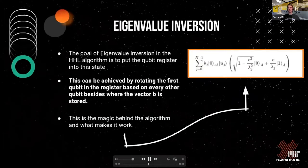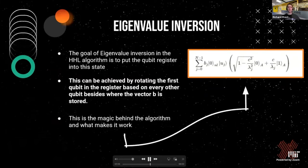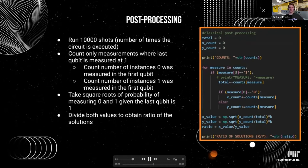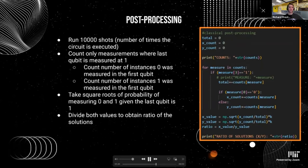Eigenvalue inversion is the magic that makes the HHL algorithm work. The goal is to put the qubit register into the desired state, which can be achieved by rotating the first qubit in the register about the y-axis based on the eigenvalues previously encoded by the QPE. For classical post-processing, most algorithms today are hybrid — both quantum and classical in nature. For the quantum portion, we run it 10,000 times, or 10,000 shots, giving us 10,000 measurements. Of these, we only count the measurements that end with a 1. Of those, we take the probability of measuring a 0 and a 1 in the first position. Taking both probabilities, we take the square root, which prepares our x state containing the variables we're solving for.